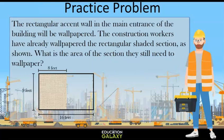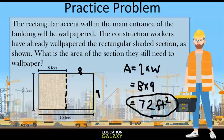Now let's try one more practice problem. The rectangular accent wall in the main entrance of the building will be wallpapered. The construction workers have already wallpapered the rectangular shaded section as shown. What is the area of the section they still need to wallpaper? Let's break this rectangle into two pieces. The area is length times width, which would be 8 times 9, which gives us 72. So our answer is 72 square feet.